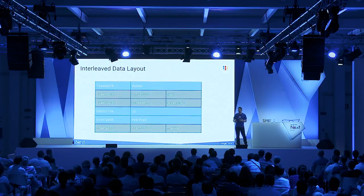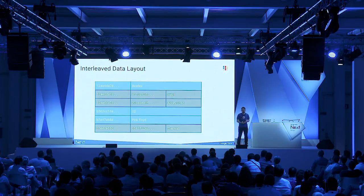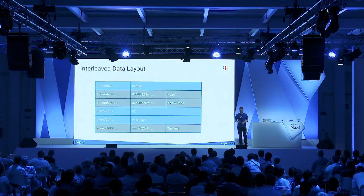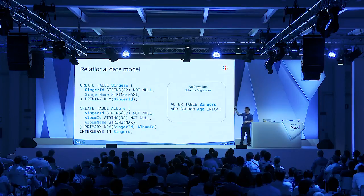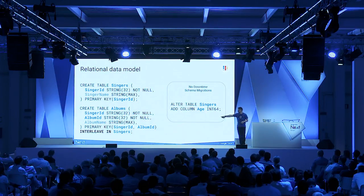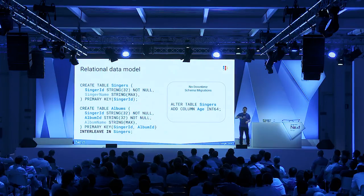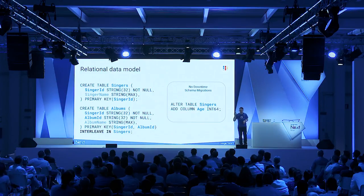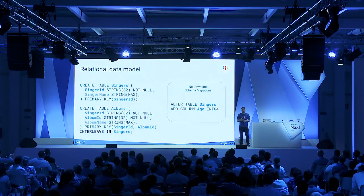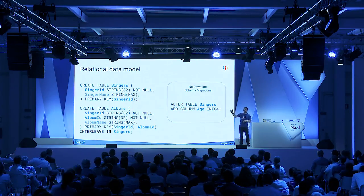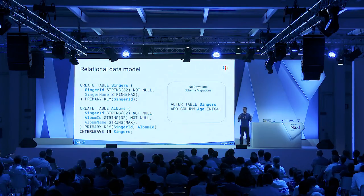This gives you a kind of free join — joins can be answered very quickly from one compute node controlling that split. To interleave, you add 'INTERLEAVE IN' and ensure the interleaved table shares the primary keys of the outer table. Also important: Spanner supports no-downtime schema updates. You can add columns, change size attributes of columns like going from STRING(20) to STRING(50). All these schema updates run in a transaction.